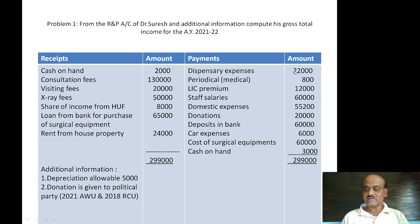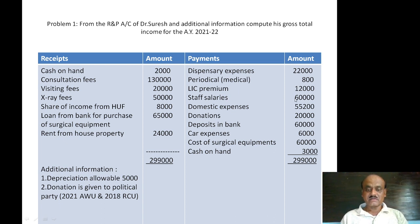On the payment side, professional expenses are to be deducted. These include: dispensary expenses, periodicals, life insurance premium, staff salary, domestic expenses, donation, deposit in bank, car expenses. Some of these are disallowable — private expenses must be identified and excluded.